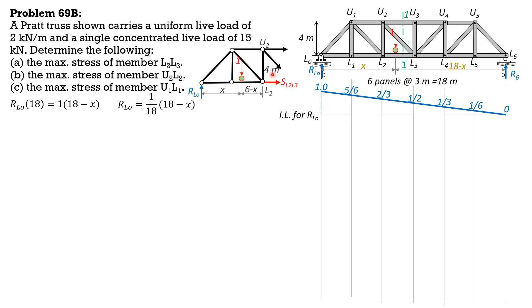Summation of moment U2 equals 0. You have SL2L3 times 4 plus 1 times 6 minus X, then equals RLO times 6. Dividing everything by 4, simplifying. SL2L3 is equal to 1.5 of RLO minus 1 fourth of quantity 6 minus X. This is applicable for the movement of the load from 0 to this joint L2 here. 0 less than equal to X less than equal to 6. Beyond that, the unit load is no longer part of the free body diagram. So we just remove the contribution of this, so it is equal to 1.5 of RLO.